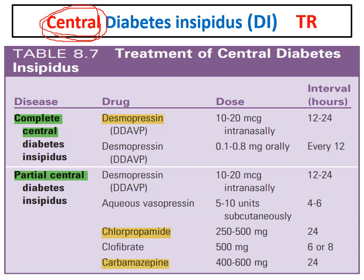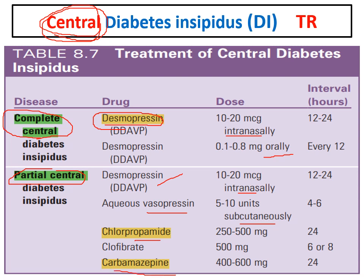For treatment of central DI: since there is defective synthesis of ADH, treatment is hormone replacement. We give vasopressin or more commonly its long-acting synthetic analog desmopressin — given intranasally (10–20 mcg) or orally (0.1–0.8 mg) for complete or partial central DI. In partial central DI, we can also give drugs that potentiate vasopressin release or action, most commonly carbamazepine and chlorpropamide.